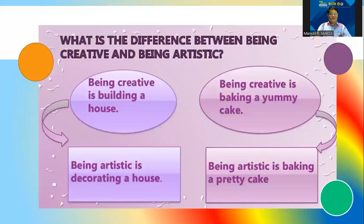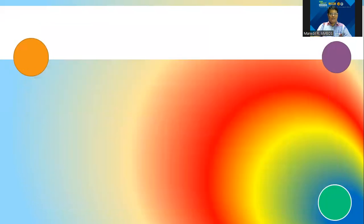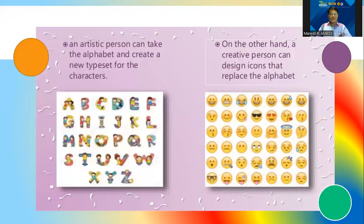The difference between being creative and being artistic: being creative is building a house, while being artistic is creating a beautiful house. Being creative is baking a yummy cake, while being artistic is baking a pretty cake. An artistic person can take the alphabet and create a new typeface for the characters, while a creative person can design icons that replace the alphabet altogether.